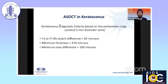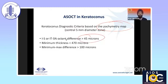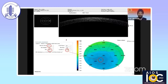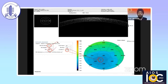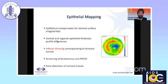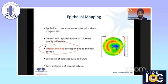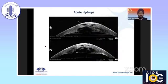Looking at keratoconus — as you all know, the pachymetry map in the center 5 mm: if there is a difference of more than 45 microns, thickness less than 470 microns, and minimum-max difference of 100 microns, that can suggest keratoconus. You can see the location in the inferior quadrant, and look at the minimum and the difference between superior nasal and inferior temporal. Even without a topographer you can identify inferior thinning. Epithelial thickness is now being emphasized because it compensates for stromal surface irregularities and can be an indicator of keratoconus.